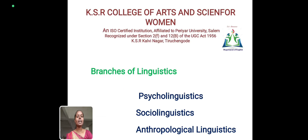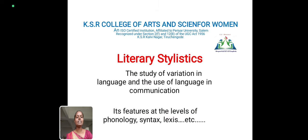There are three branches in linguistics: sociolinguistics, psycholinguistics, and anthropological linguistics. Literary stylistics is the study of variation in language and the uses of language for communication.